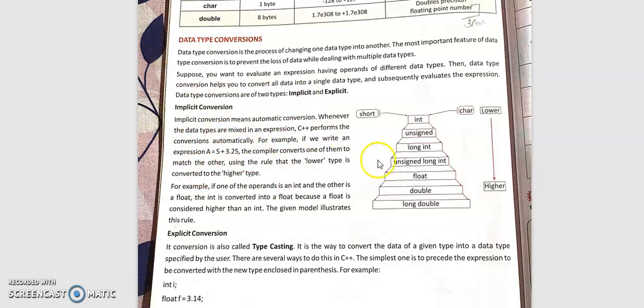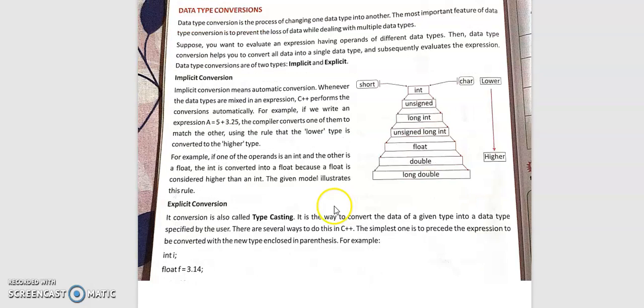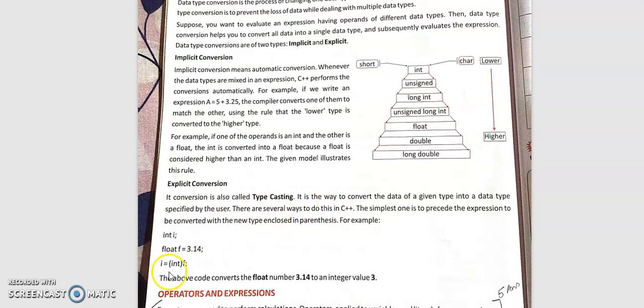The other way around, like f equals 3.14 but given as integer, we are telling int of f, so the other values get truncated. Truncation means the .14 gets deleted and only 3 will be taken because we're telling f should be an integer. That is type casting, converting a given type into a data type specified by the user.